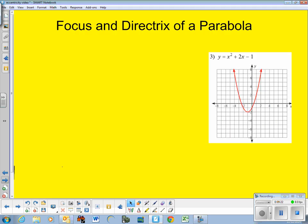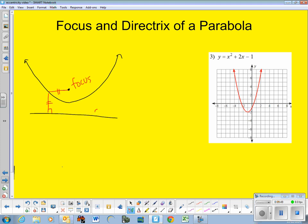Focus and directrix. The definition of a parabola. All points, equidistant from a point and a line. So, it looks something like this. Distance from the point to the line is the same. And, if you do all such points, you create a parabola. That point's called the focus. That line is called the directrix. So, what I would love to know is if I have a parabola such as this one, what are the focus and the directrix?